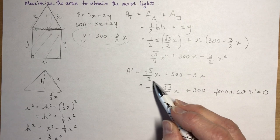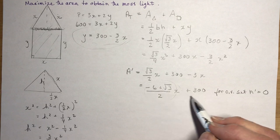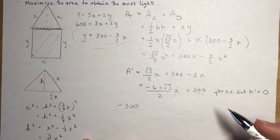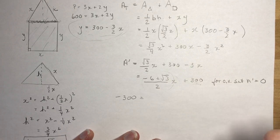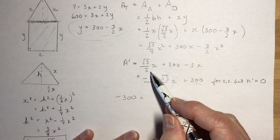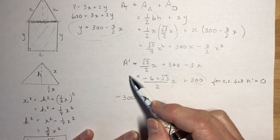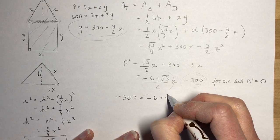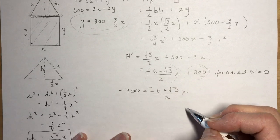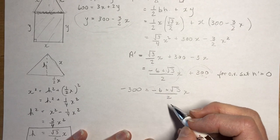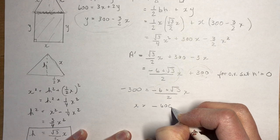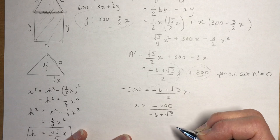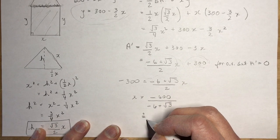For critical values, set A′ = 0. Move 300 to the other side (it becomes −300 when moved): (−6 + √3)/2 · x = −300. Multiply both sides by 2 and divide by (−6 + √3): x = −600 / (−6 + √3). Calculating this gives x ≈ 140.58 centimeters.